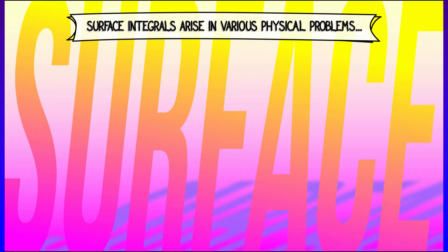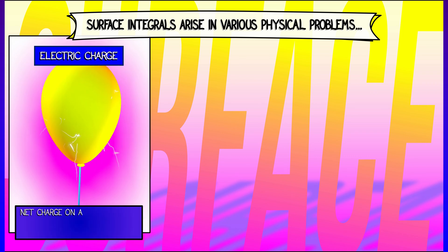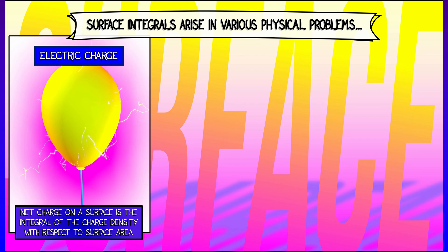Consider the following physical examples. Let's say you're trying to compute the net electric charge across some surface. If you know the charge density and you integrate that with respect to the surface area element, that will give you the net electric charge across that surface.